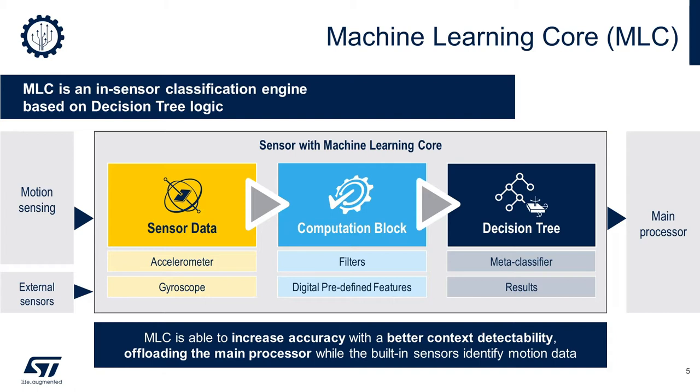The available features are mean, variance, energy, peak-to-peak, zero-crossing, peak detector, and minimum and maximum values.